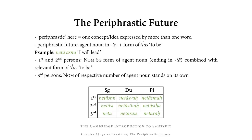In the first and second persons, the periphrastic future uses the nominative singular of an agent noun — ending in -tā — combined with the relevant form of as. So: netā asmi, netā svaḥ, netā smaḥ (first persons); netā asi, netā sthaḥ, netā stha (second persons). These can be written as two words or combined into one. In the third persons, there is just the agent noun in the nominative of the respective number: singular netā (he will lead), dual netārau (they both will lead), plural netāraḥ (they will lead).